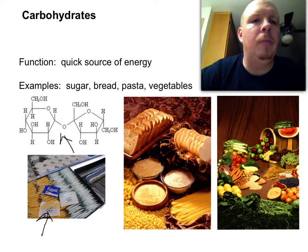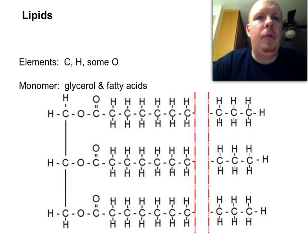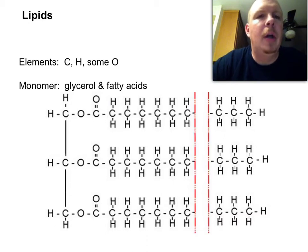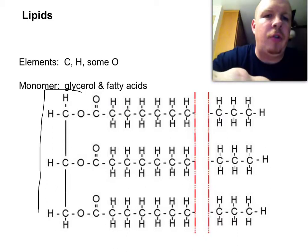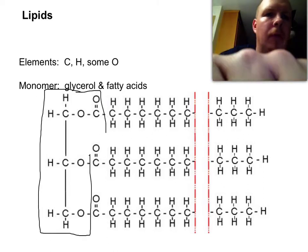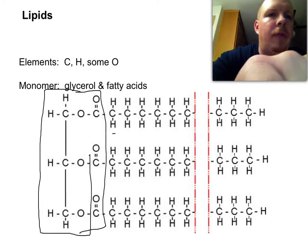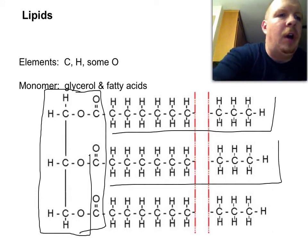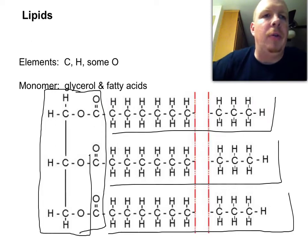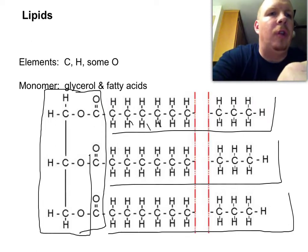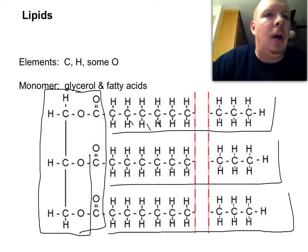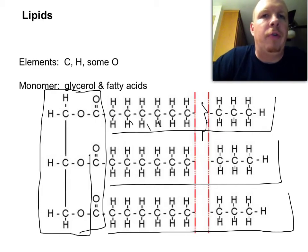Next up is lipids. With lipids, there are again three elements — same as carbohydrates: carbon, hydrogen, and some oxygen, though not very much. The monomer is actually made up of two parts: a glycerol and three fatty acids. This section of the lipid is called the glycerol, and then each of these that extend out are called fatty acid chains. The CH2 units can repeat 20, 30, or 50 times, so the red section indicates they can extend for quite a long time.